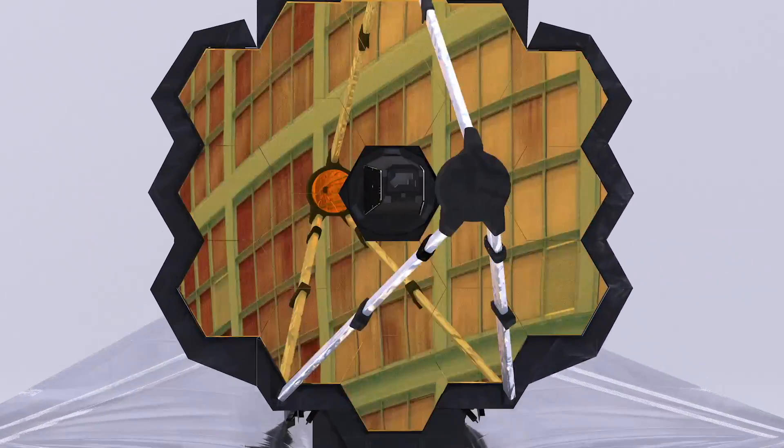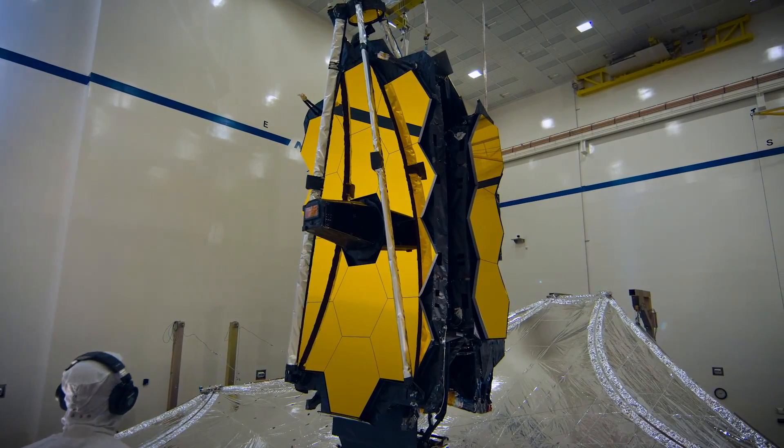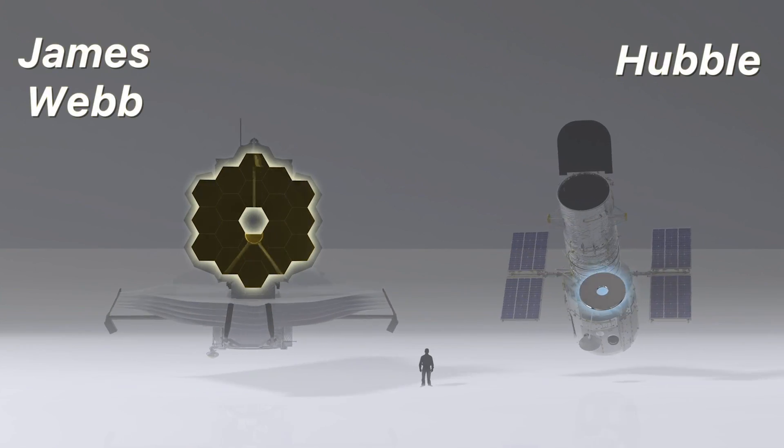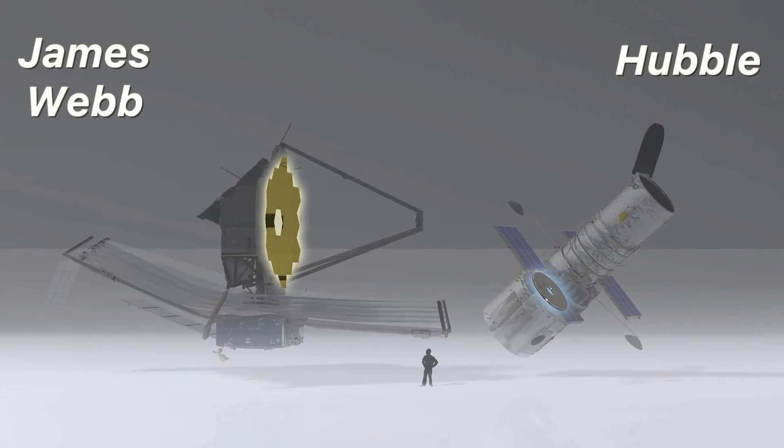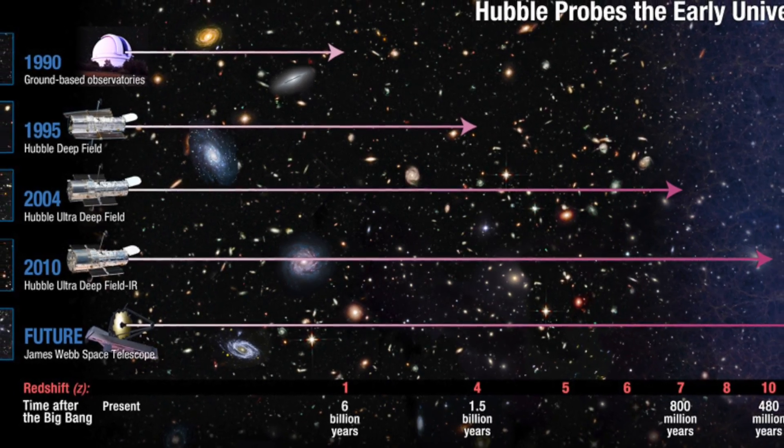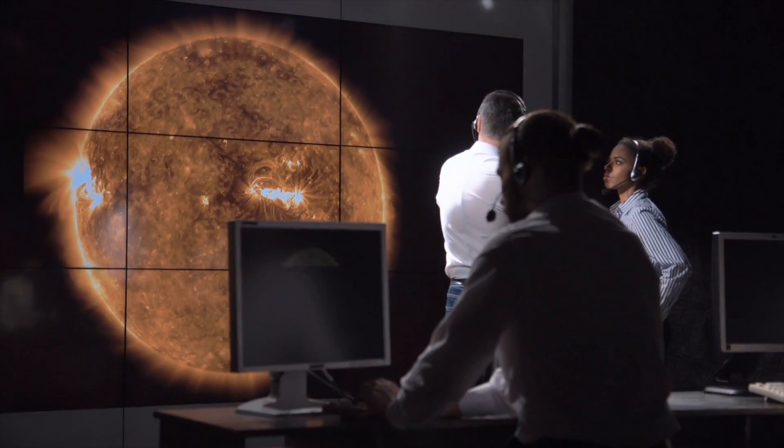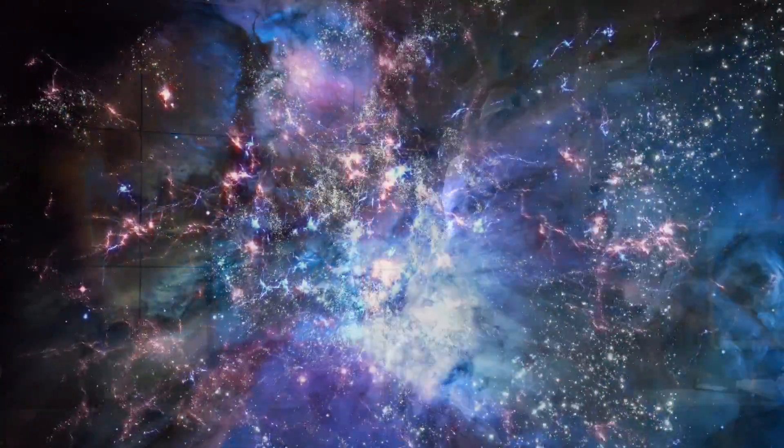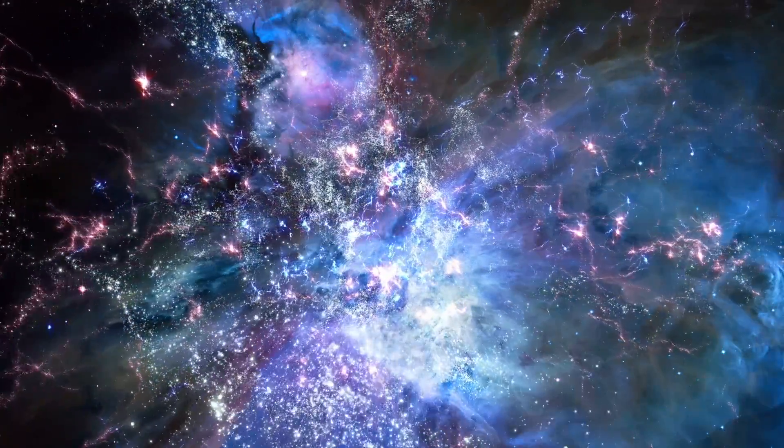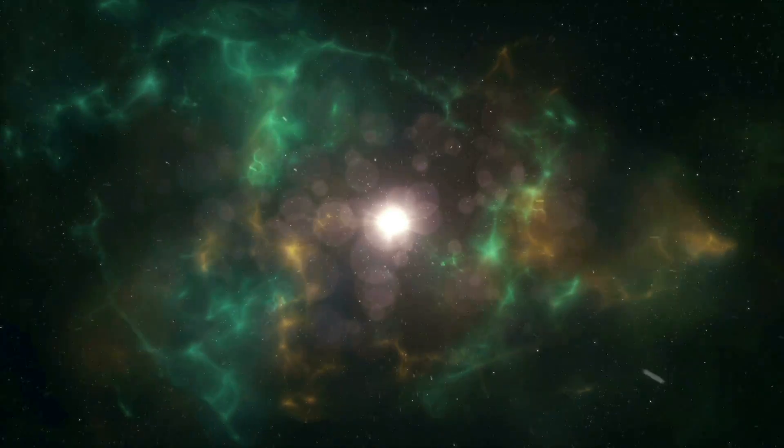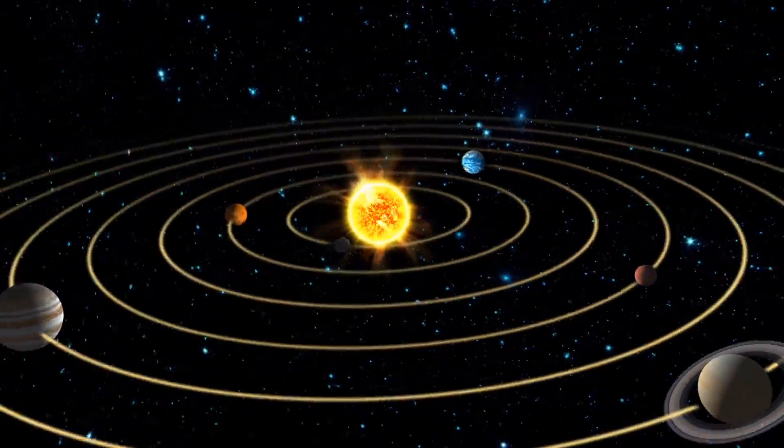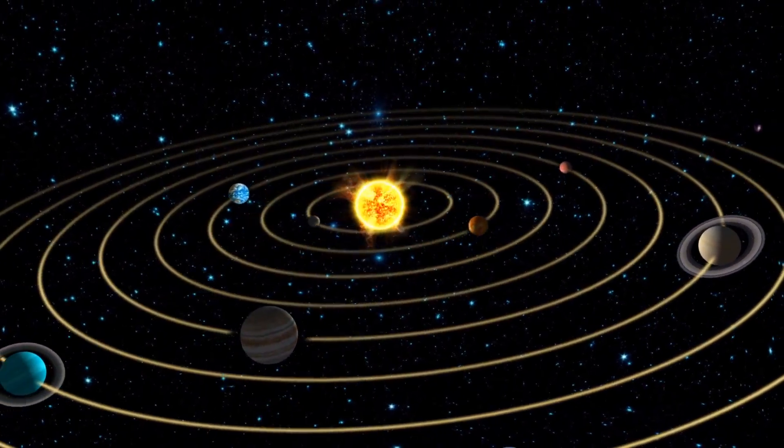With greatly improved infrared resolution and sensitivity, the James Webb Telescope will view objects that are too old and distant for Hubble Telescope, up to 100 times fainter. This is expected to enable a broad range of investigations across the field of astronomy and cosmology, such as observation of the first stars and the formation of the first galaxies, as well as detailed atmospheric characterization of potentially habitable exoplanets.